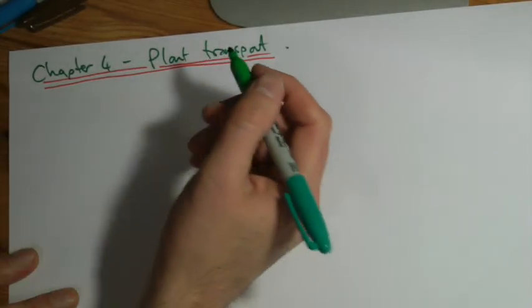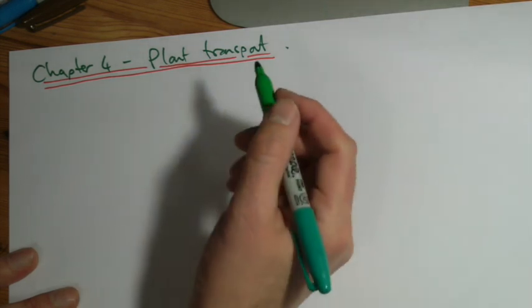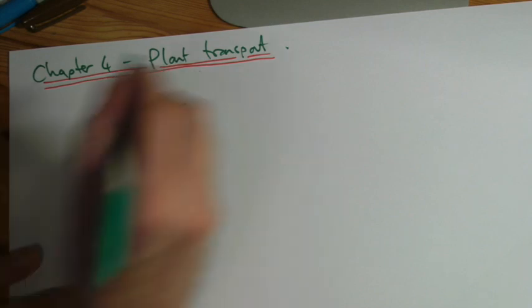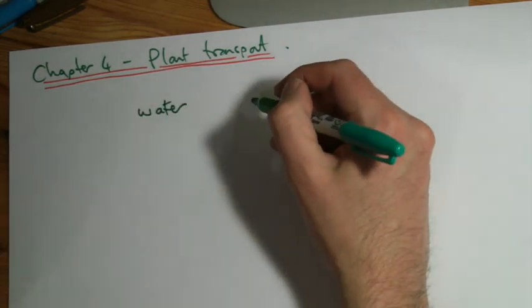So this is the last part of the chapter 4 stuff, which is on plant transport. Plants, in exactly the same way as animals, have to transport things around. There's not so much to transport really, not as many things certainly as there are in animals.